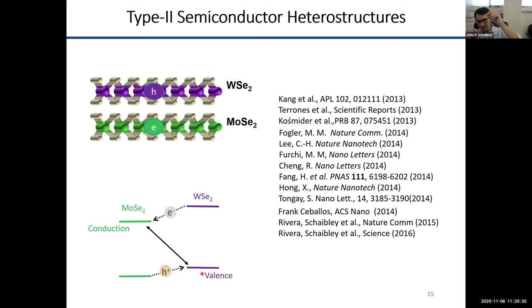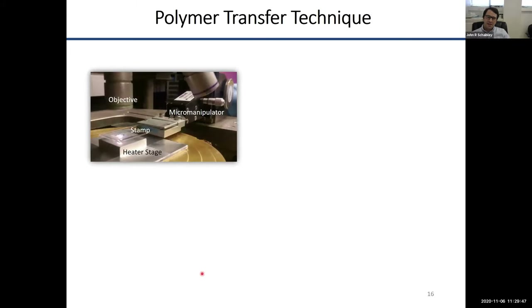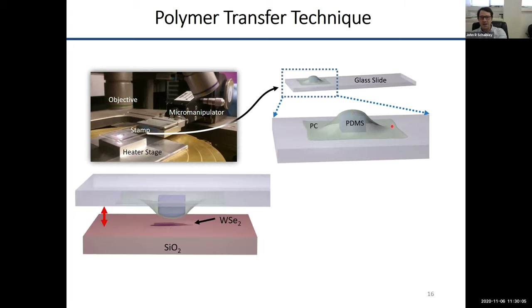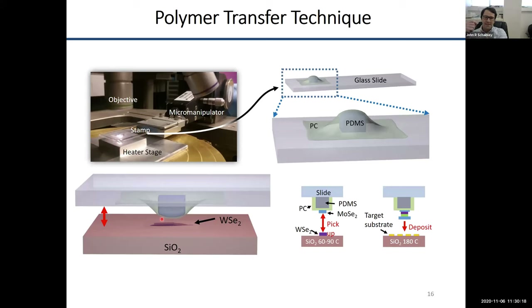Because the electron and hole are separated spatially, you expect their lifetime to be much longer. This is really what we're looking for — a long-lived exciton that might enable transport. The way we make these heterostructures is, after isolating and characterizing individual monolayers, we use a polymer stamping technique. We make a transparent rubber stamp with a clean sticky thin film, stamp it down onto our monolayer, and repeat the process to make a multi-layer structure.